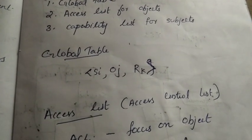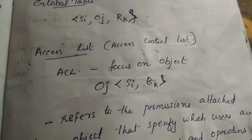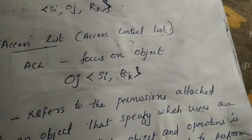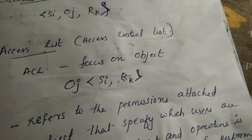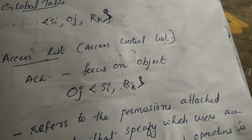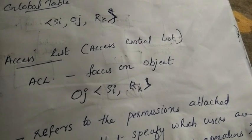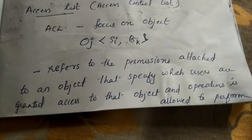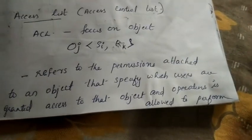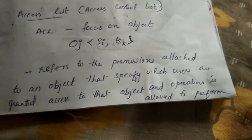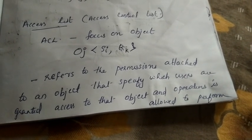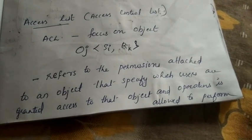The second method is Access List for objects, also called ACL. This is an important topic. Access control list mainly focuses on the object. The representation is: object OJ file1, then user1, then read. It refers to the permissions attached to an object that specify which users are granted access to that object and what operations are allowed to perform.